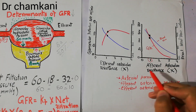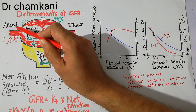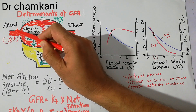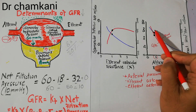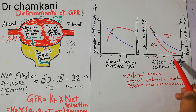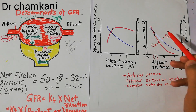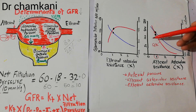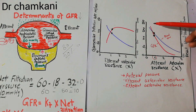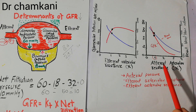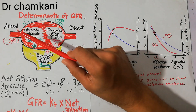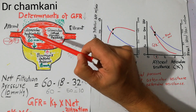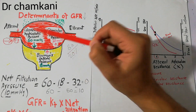If the afferent arteriolar resistance increases — if the resistance to the movement of blood increases — the blood flow starts decreasing and the GFR, shown by the red graph, also starts coming down. With the increase in afferent arteriolar resistance, both renal blood flow and GFR decrease. This is because the increasing resistance of the afferent arterioles causes the glomerular hydrostatic pressure to drop, and when the glomerular hydrostatic pressure drops, the GFR also drops.